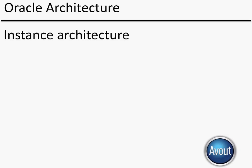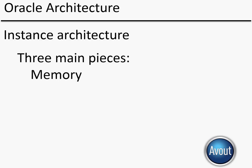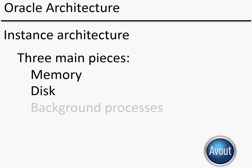So let's take a look at the instance architecture — how the actual database instance is designed by you, the DBA, so that it runs properly. There are three main pieces we need to concern ourselves with: memory, disk, and the background processes.